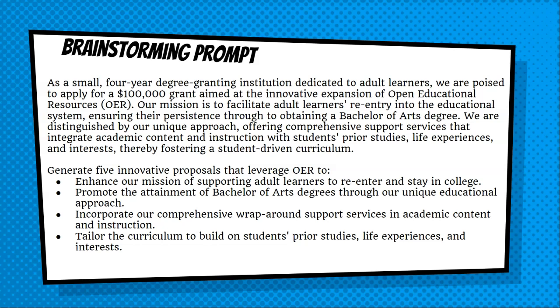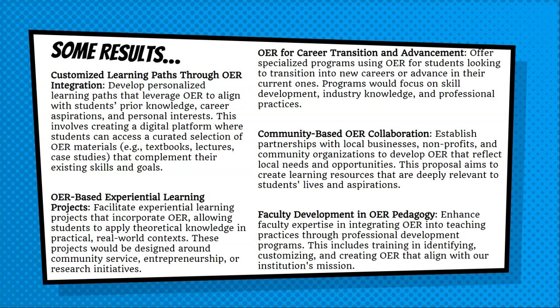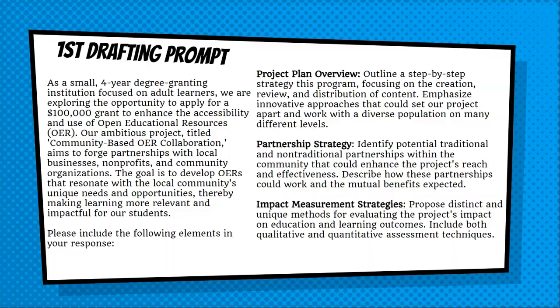When it comes to brainstorming, AI can identify a range of things you might not have thought of and extend your thinking about what you might do. In this example, I'm using the context of my institution, College Unbound, to determine unique types of open educational resource proposals that align with our mission. It provided about six or seven examples. What's great is I can continue brainstorming by asking for more or asking it to mix the best parts of two or more ideas. So now I have several clear directions: OER-based experiential learning projects, community-based OER collaboration, or OER for career transition and advancement. For many of us the blank screen is so intimidating — having AI start a draft is incredibly helpful and allows us to build from there.